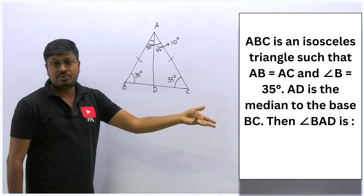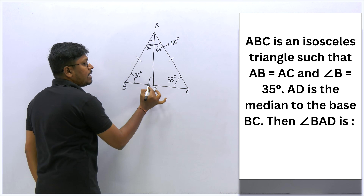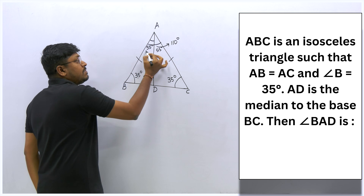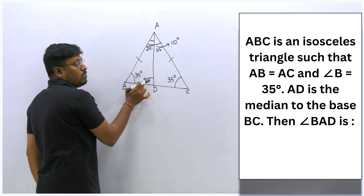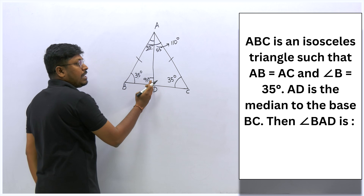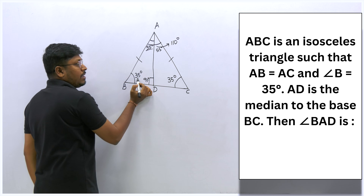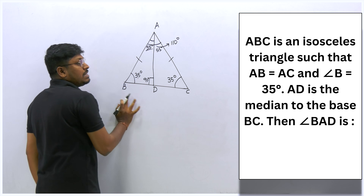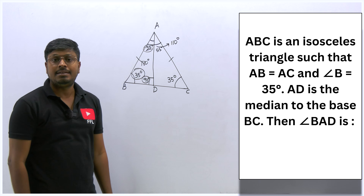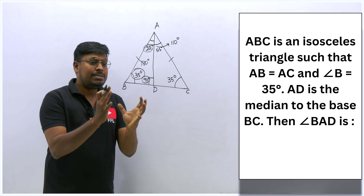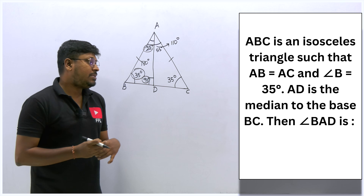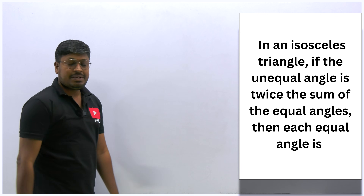An alternative approach: the median to the base in an isosceles triangle is also perpendicular to the base, making a 90-degree angle at D. So in triangle ABD: 90 + 35 + angle BAD = 180, giving angle BAD = 55 degrees. Both methods confirm the answer is 55 degrees.